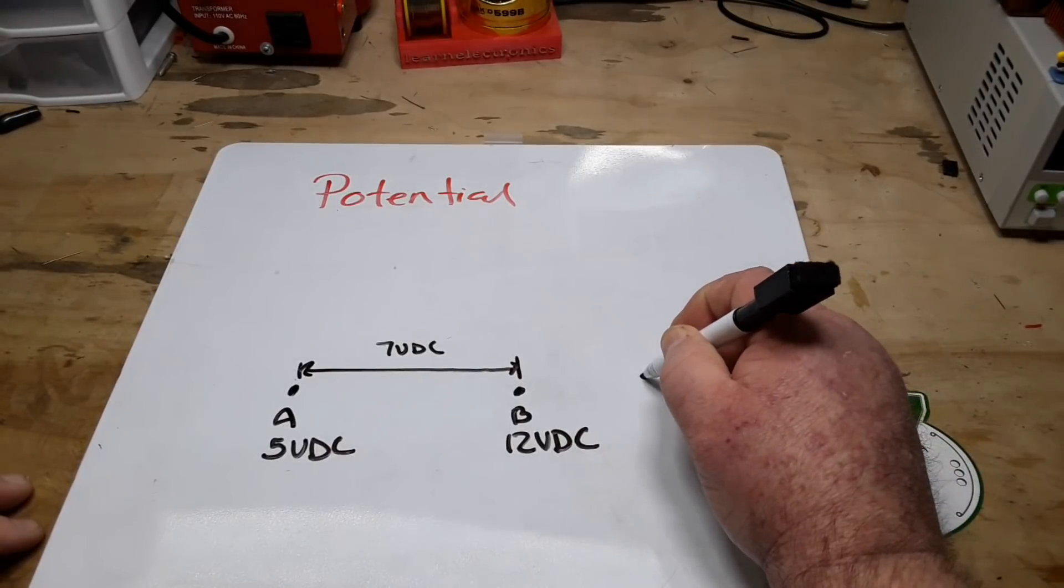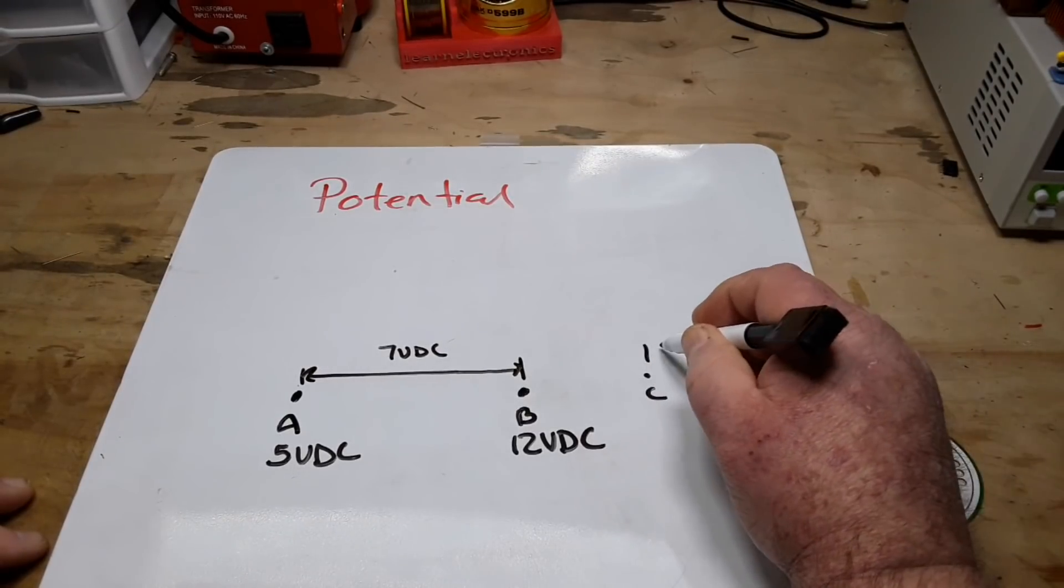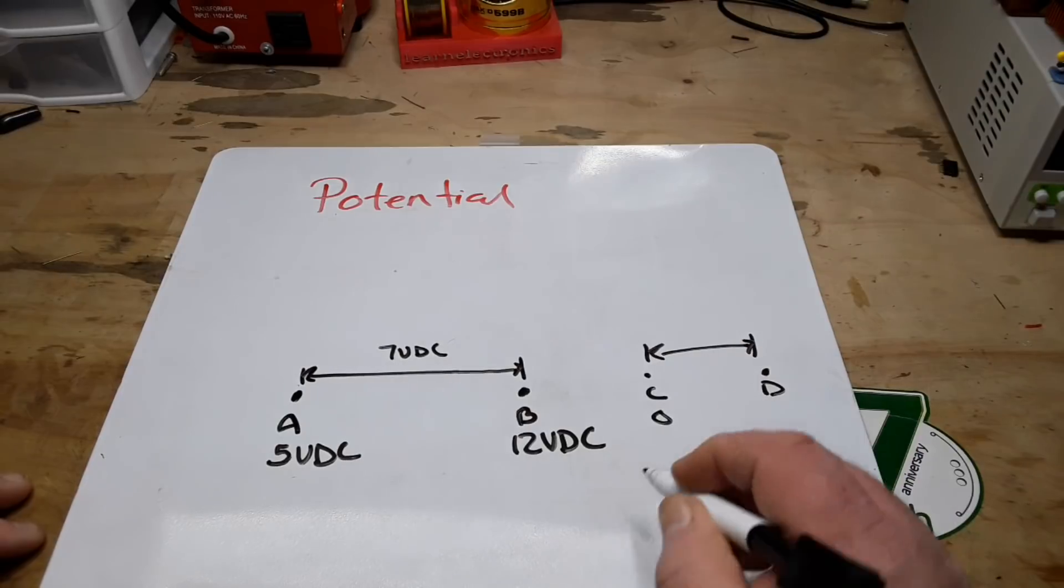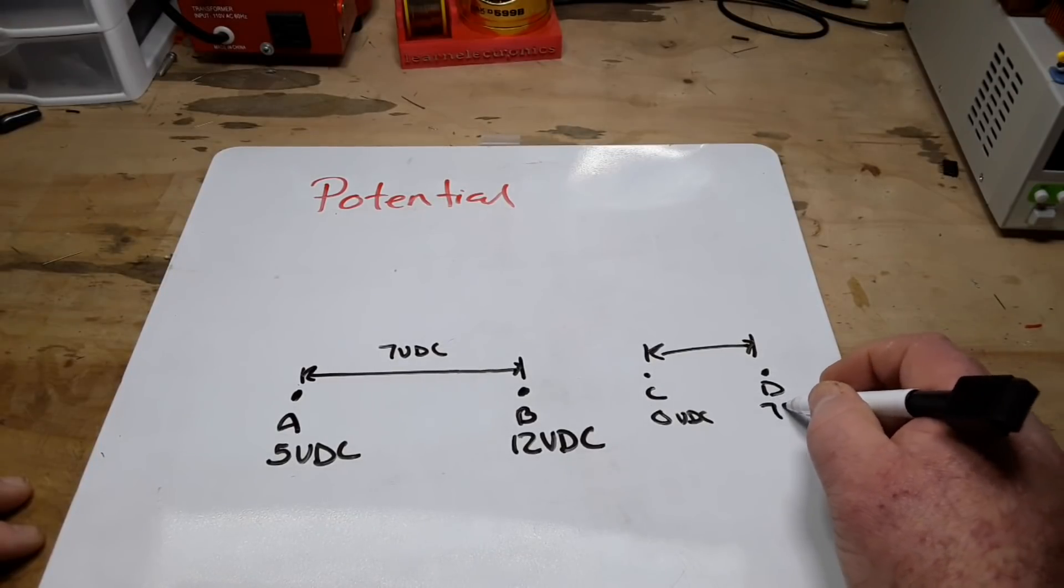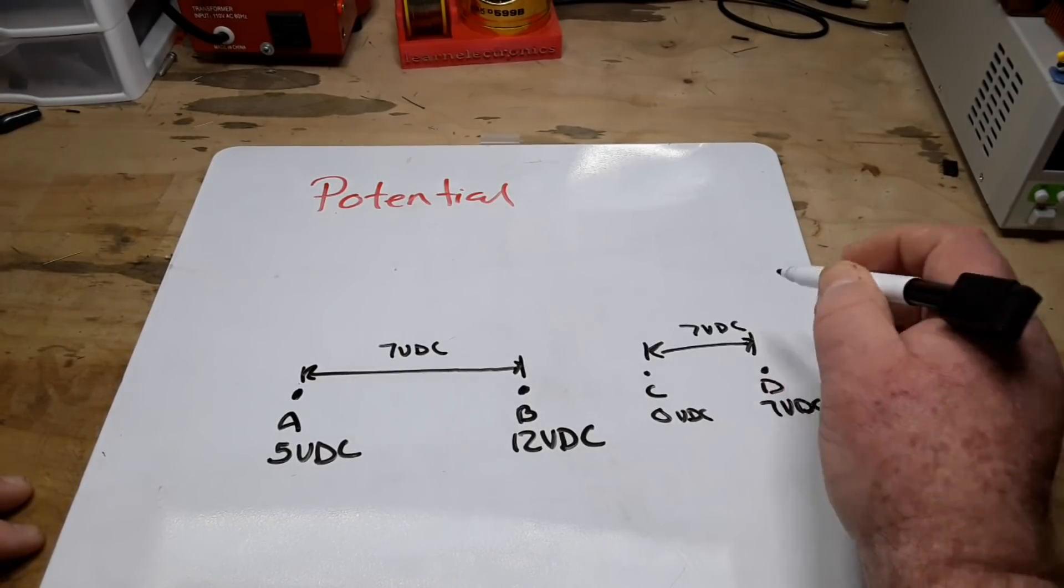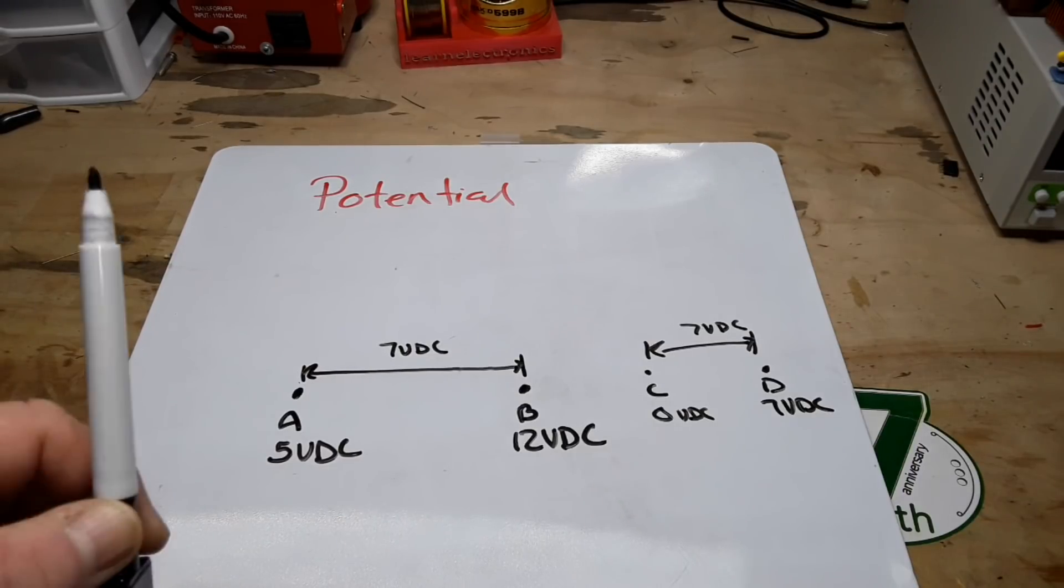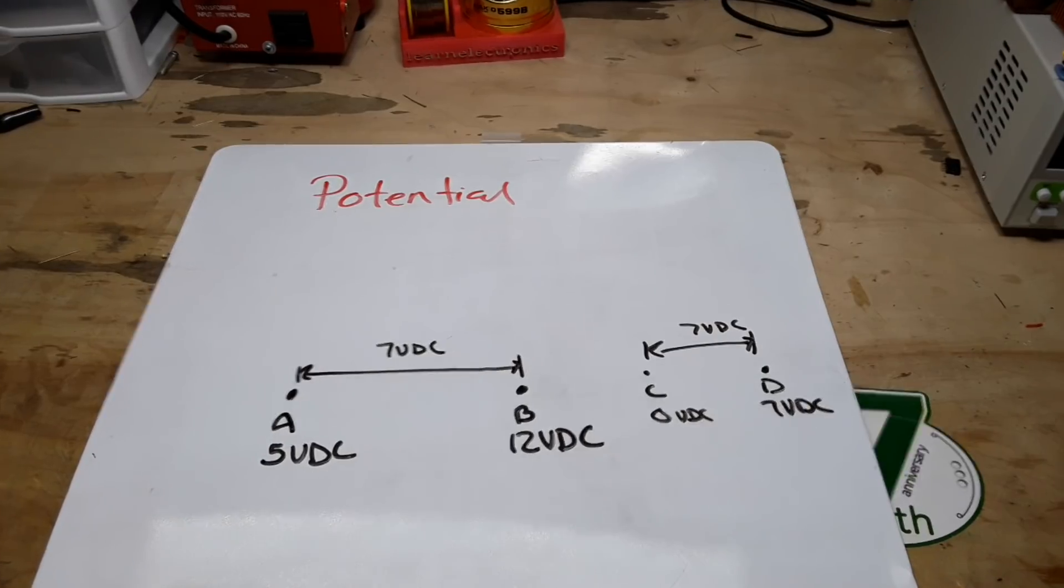Now, if we have another circuit, point C is at 0 volts DC and point D is at 7 volts DC. Your potential in this circuit is 7 volts DC. You see what I'm saying here? Remember, these two circuits have the same potential, even though they're not at the same starting point. And this is why I always say to connect your grounds first. It's very important.